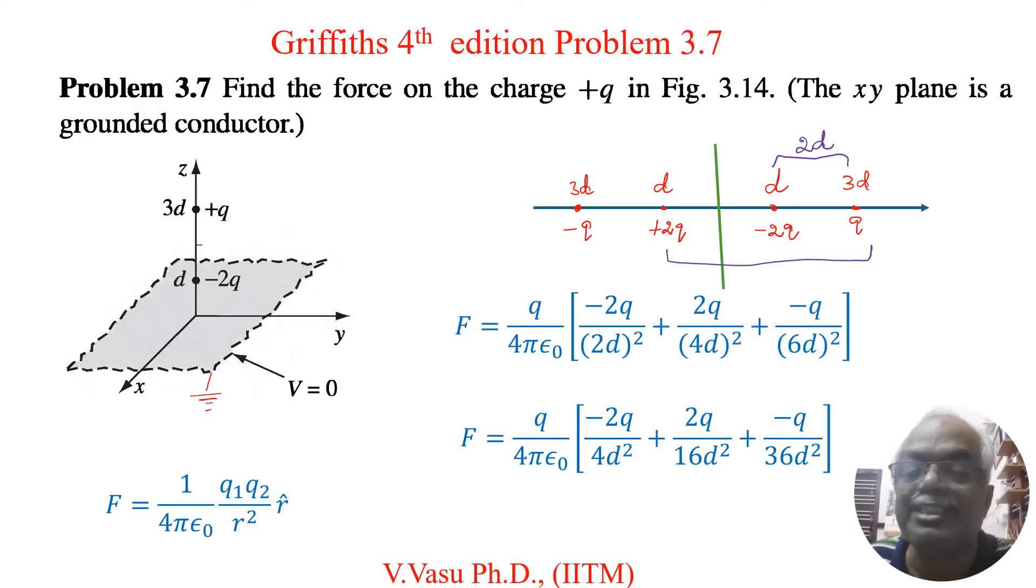Here to here this distance is 4d, because from the origin it is 3d, here another d, so you will get 4d distance. So this charge is 2q, so plus 2q. I have written 2q divided by 4d squared, because distance is 4d squared.